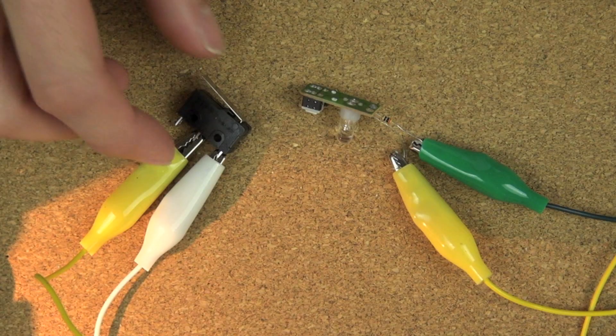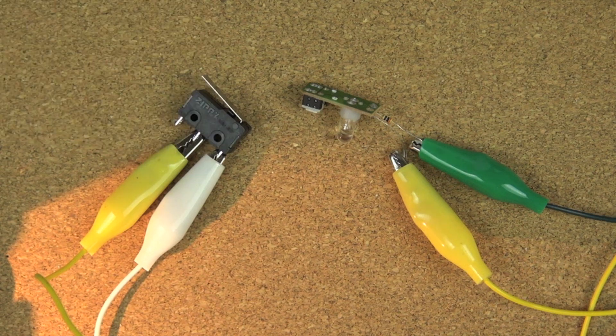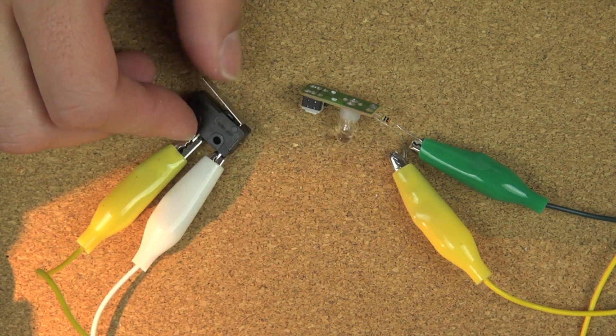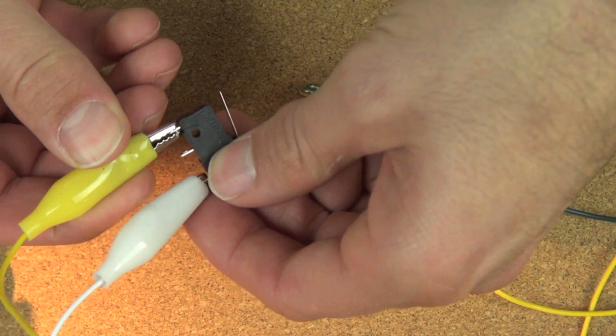In this video we're going to show you how to make a bumper switch for your BitsyBot. We've got the wires connected to 1 and 3, the power is connected to 1 and 3, and you can see the LED light up there.